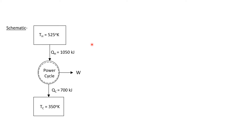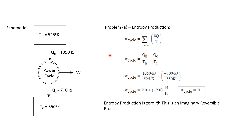Let's get back to the problem. Here's a copy of the schematic and let's look at how we can calculate entropy production. We'll use the Greek letter sigma as our symbol for entropy production. This equation says that the negative of the entropy production throughout a cycle is equal to the summation around the cycle of the quantity dQ over T, where dQ is the amount of energy transferred by heat transfer and T is the temperature at which it is transferred.